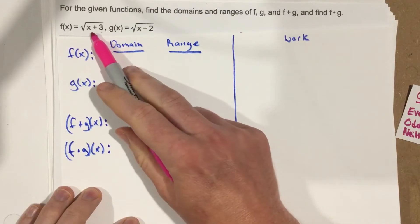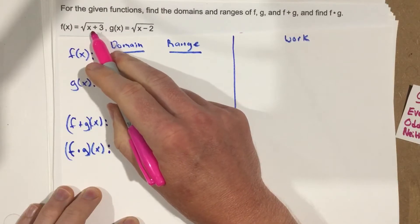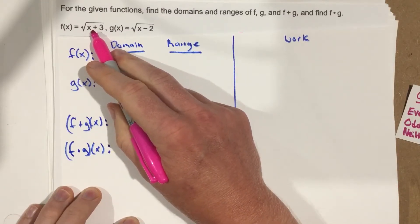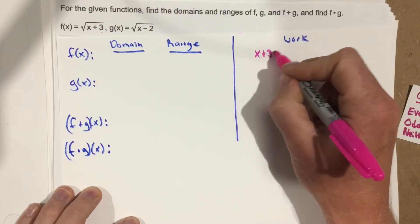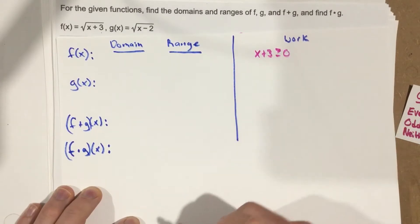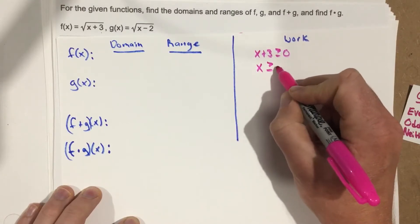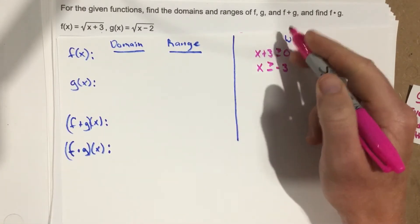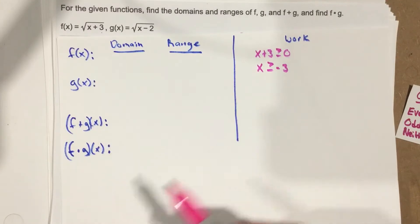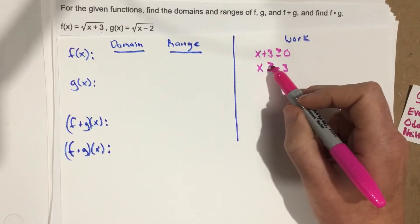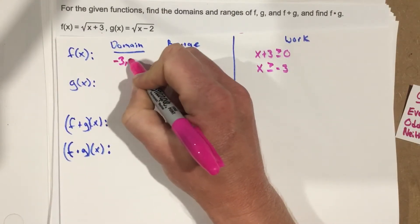For f of x, I'm going to use root x plus 3. Because a radical function cannot be negative — I can take the radical of 0 but not a negative — I take the inside of f of x, which is x plus 3, and say that has to be greater than or equal to 0. Subtracting the 3, x has to be greater than or equal to negative 3. So the domain for f of x is negative 3 to infinity.